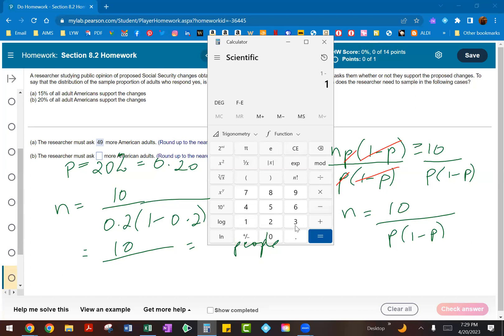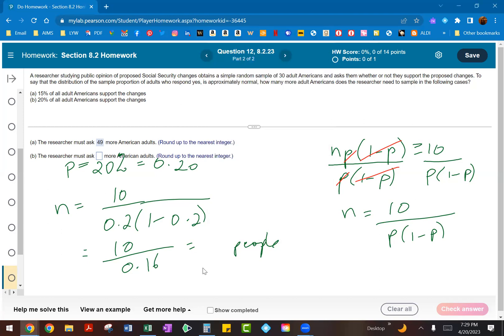So you're doing 1 minus 0.2, which of course will come out to be 0.8. And then we multiply that with the 0.2. And of course, as you can see, that will come out to be 0.16. So we are dividing 10 by 0.16. And again, I'm going to just save this in our memory. And then we're going to do 10 divided by and then recall our memory. So we've got 0.16, and then we will go ahead and find that answer. And you can see this is coming out to be 62.5 people.